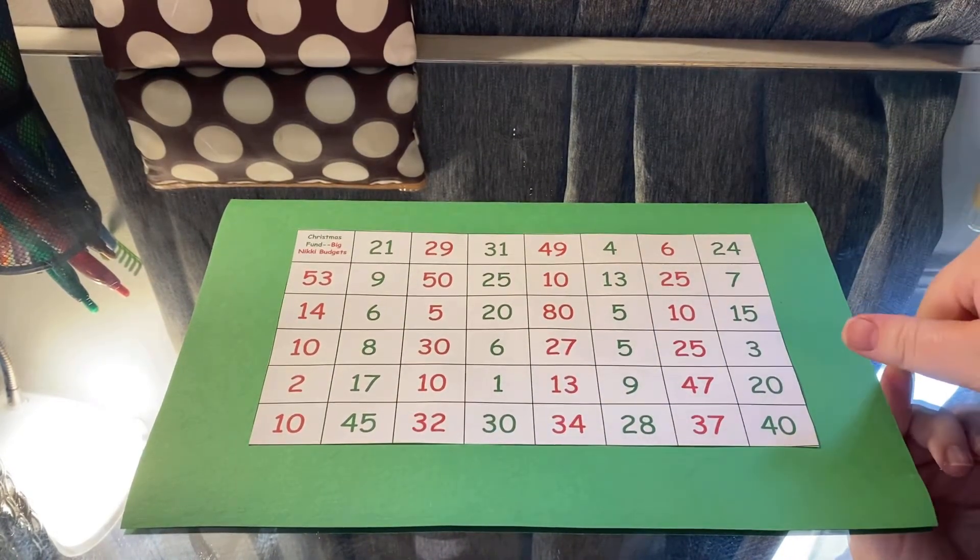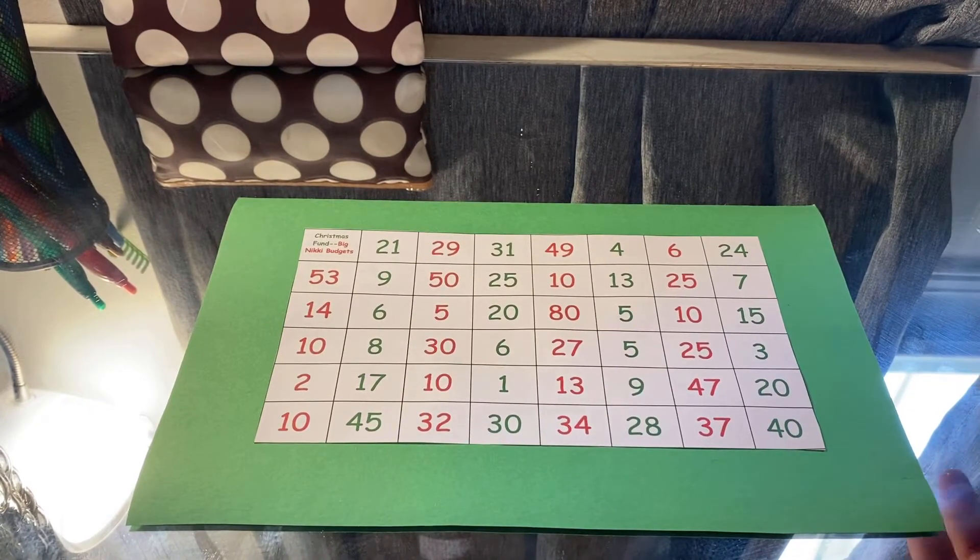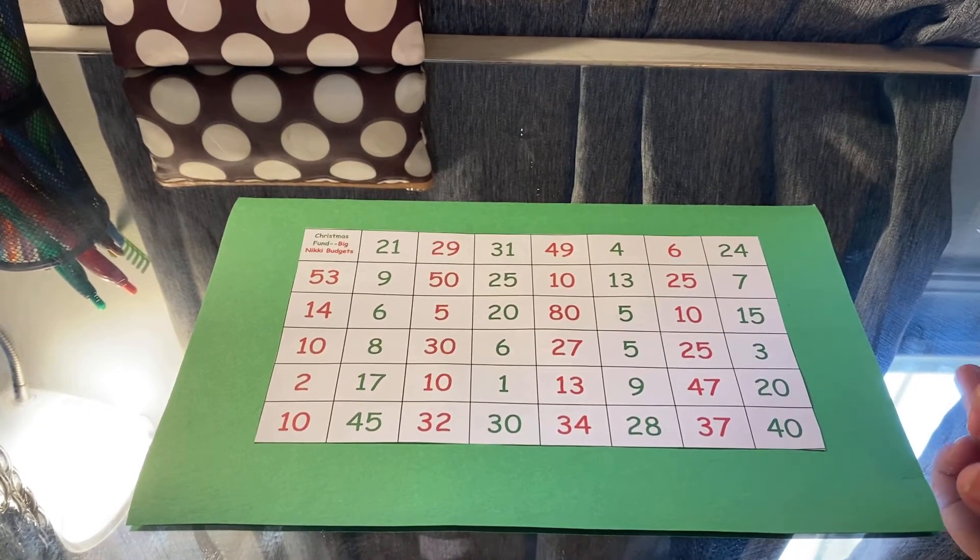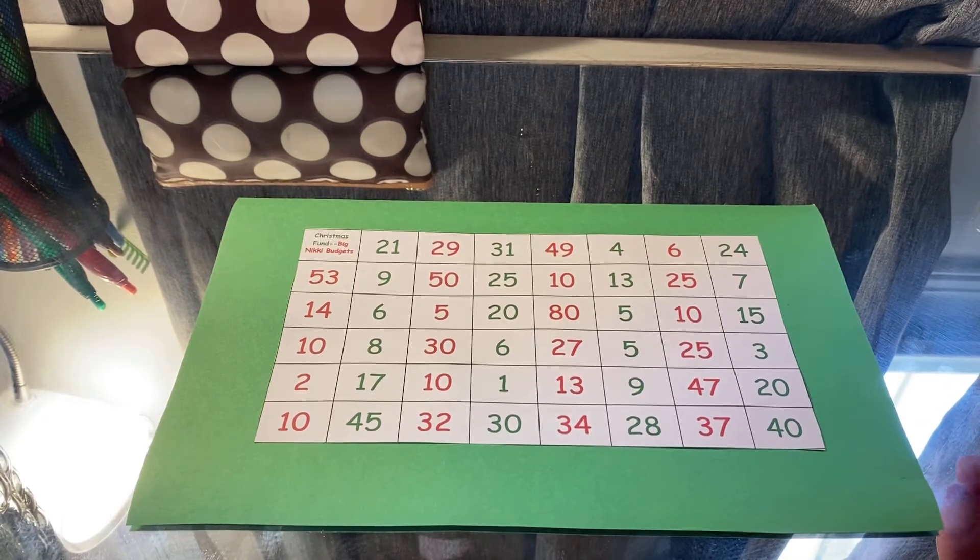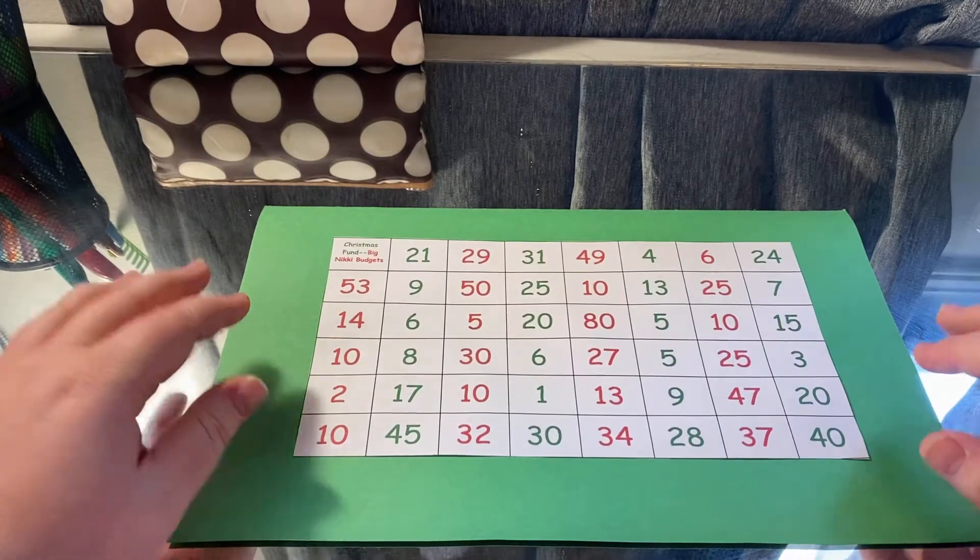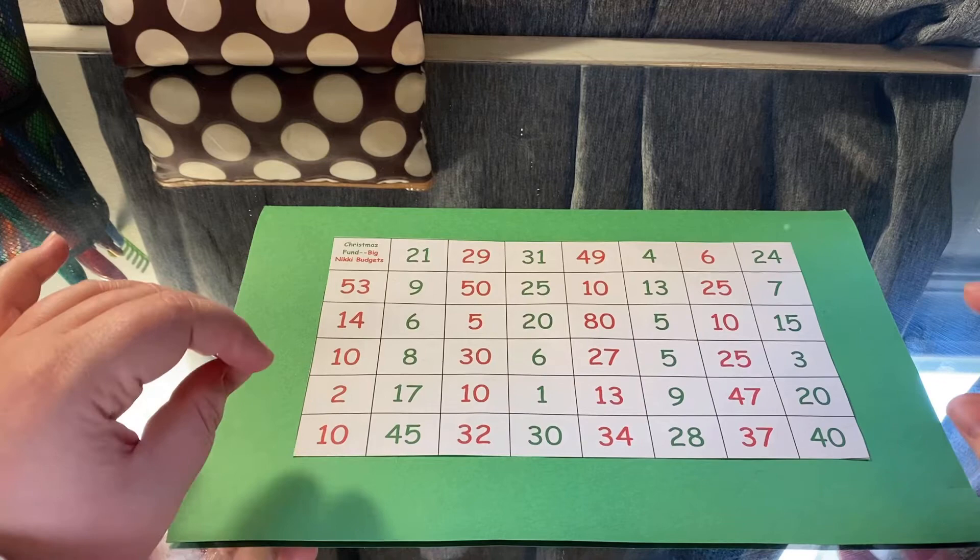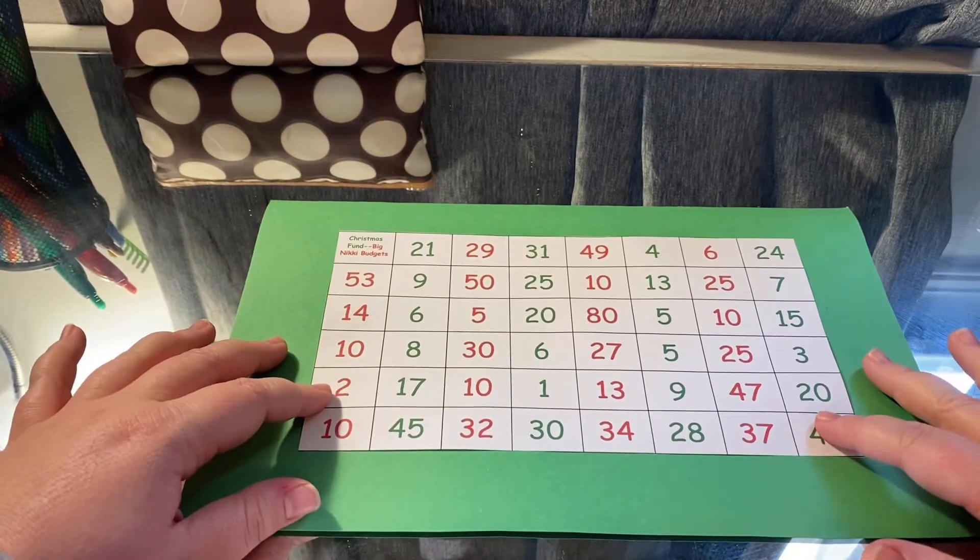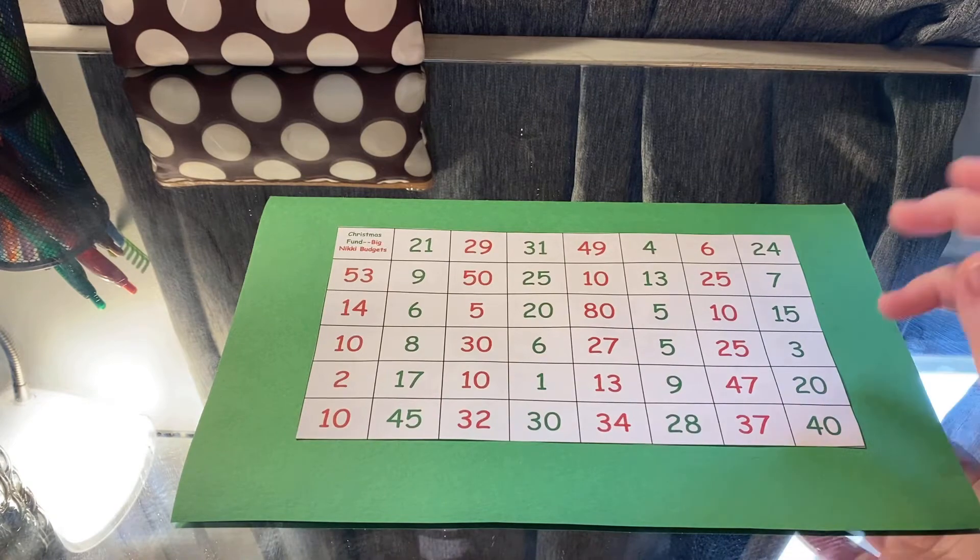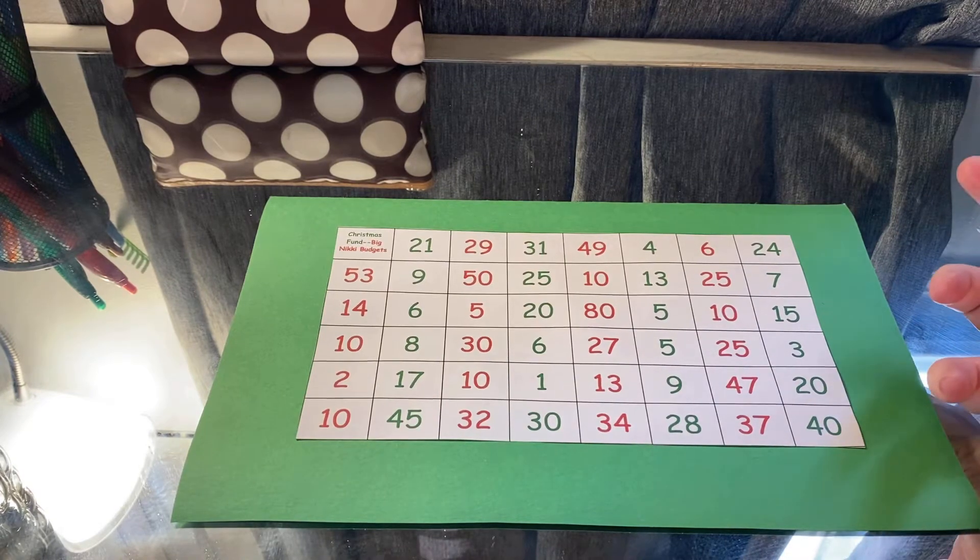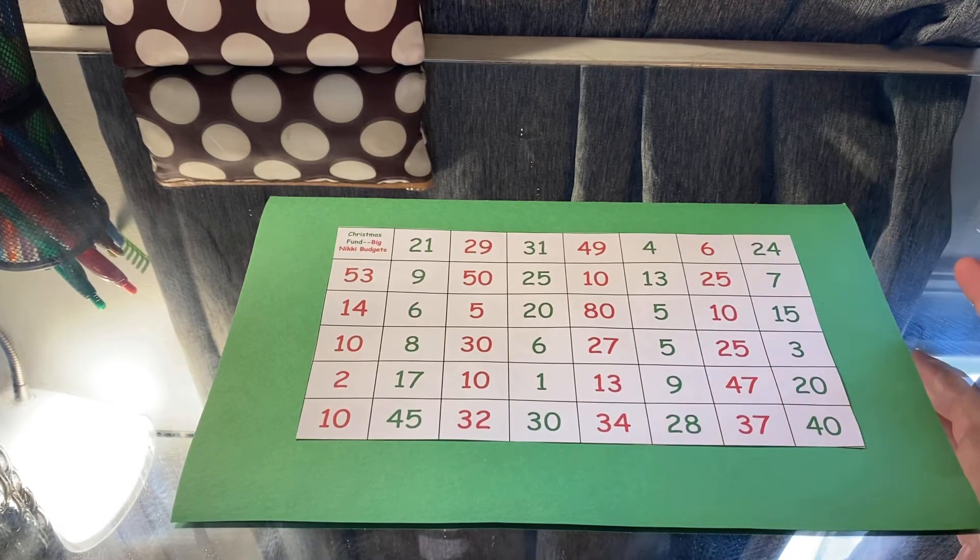But let me go ahead and talk about the different amounts on here. So this is starting next paycheck, which for me, since I get paid Tuesdays, it's going to start on February 2nd. So first paycheck of February is when I'll be starting it. And there should be 47 weeks until Christmas at that time. So there's 47 different boxes on here. For me, I get paid weekly, so I'm just going to have to fill in one box. If you get paid biweekly, then you'll need to fill in two boxes.